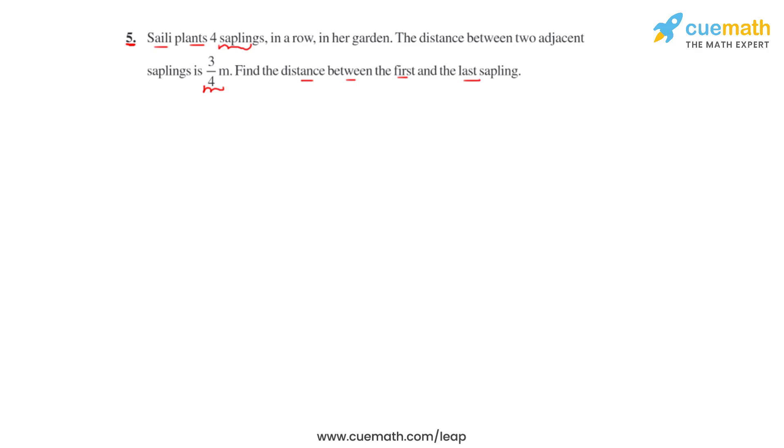So to start with we'll try to visualize this question. So in here we can see that we have got four saplings. This is the first sapling, second sapling, third sapling and the fourth sapling.